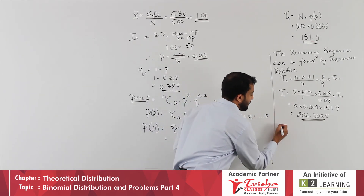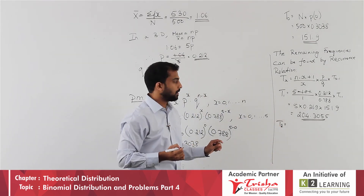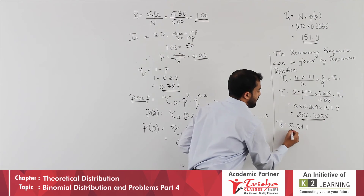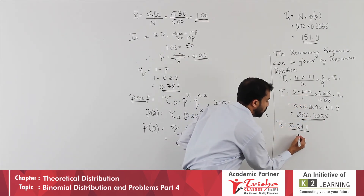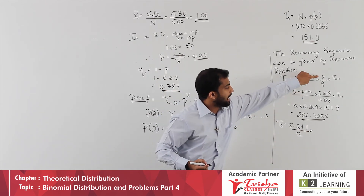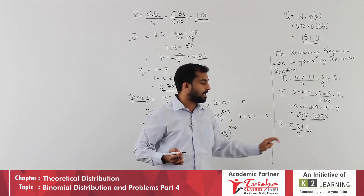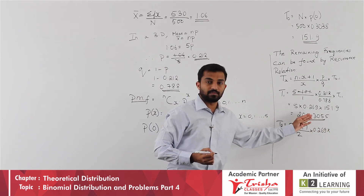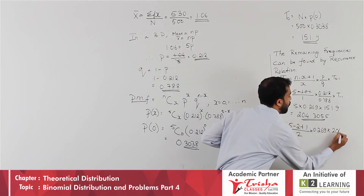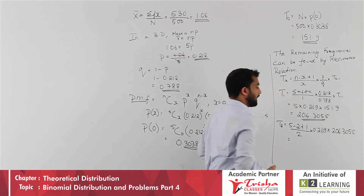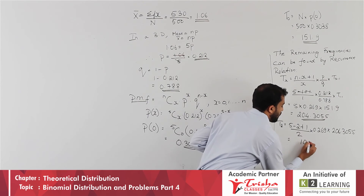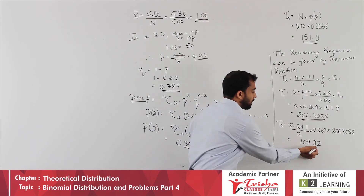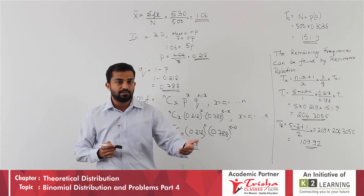Similarly, T(3) = [(5 − 3 + 1) / 3] × 0.269 × 109.92 = 29.57, T(4) = [(5 − 4 + 1) / 4] × 0.269 × 29.57 = 3.98, and T(5) = [(5 − 5 + 1) / 5] × 0.269 × 3.98 = 0.2141.